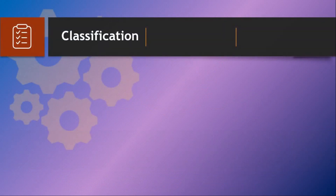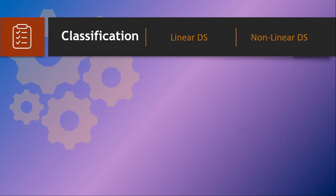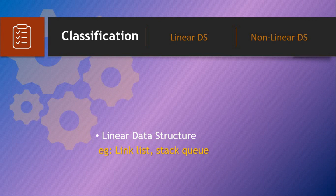Next topic is classification. In the classification of data structures, there are two types: one is linear data structure and another one is nonlinear data structure. Linear data structures include linked list, stack, and queue.